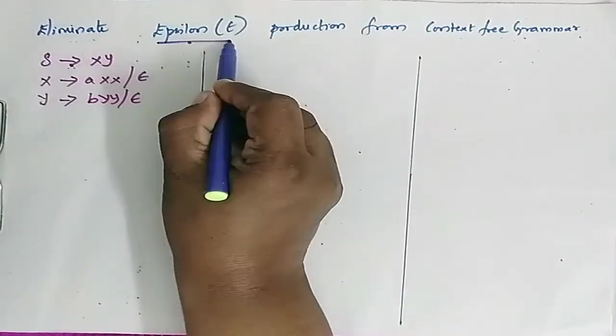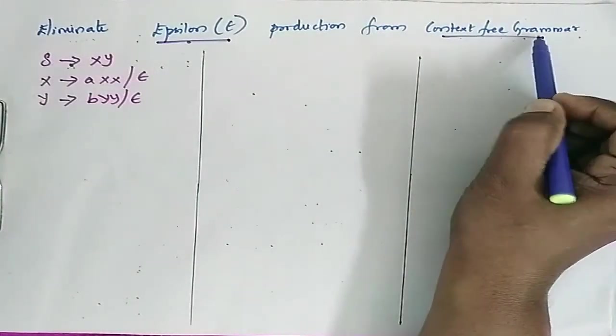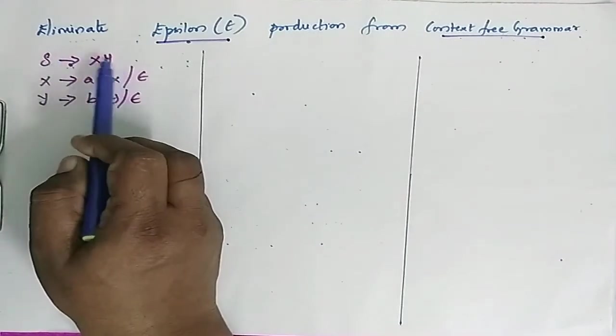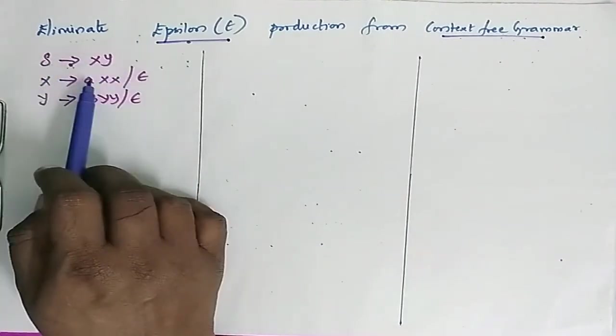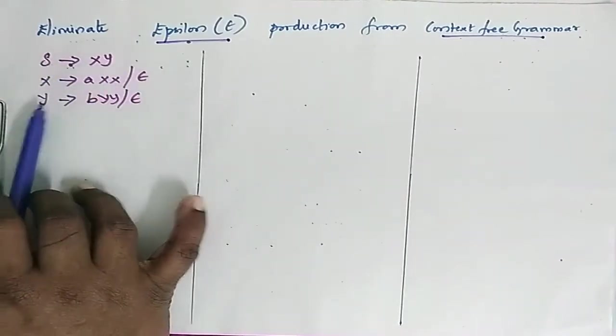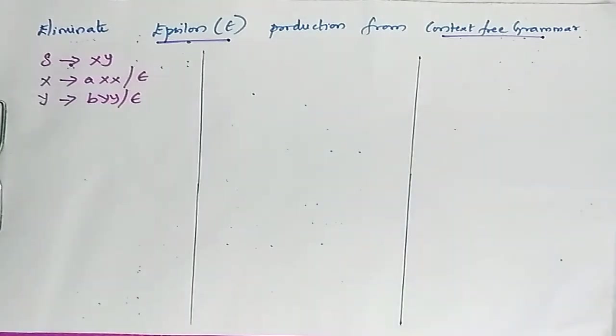Eliminate epsilon productions from context-free grammar. The grammar is: S determines XY; X determines AX, X epsilon; Y determines BYY, Y epsilon.